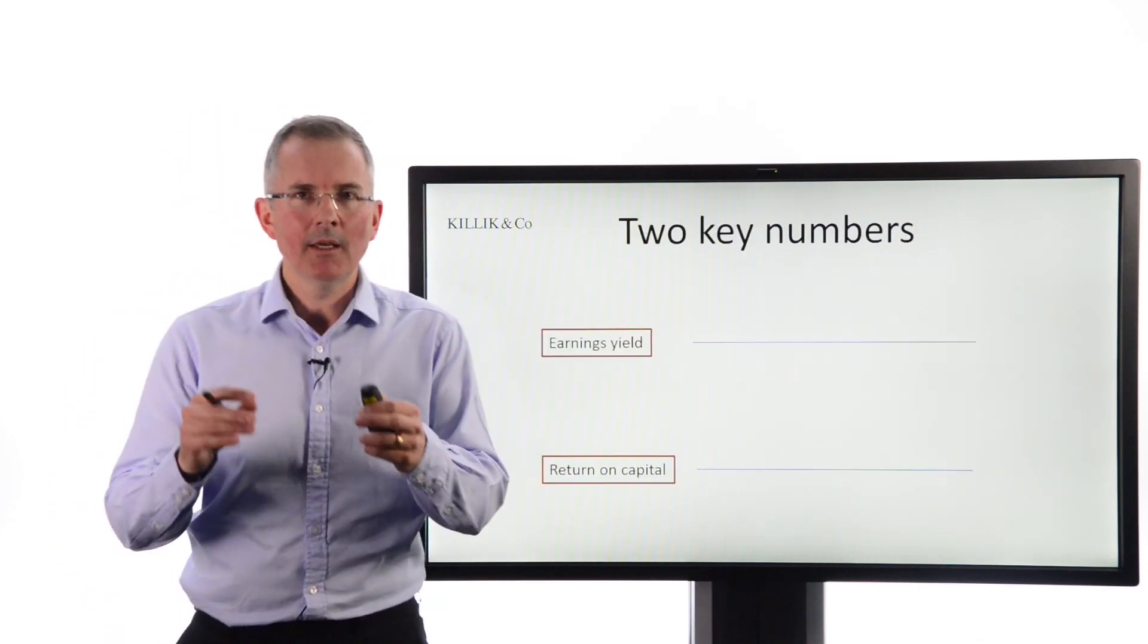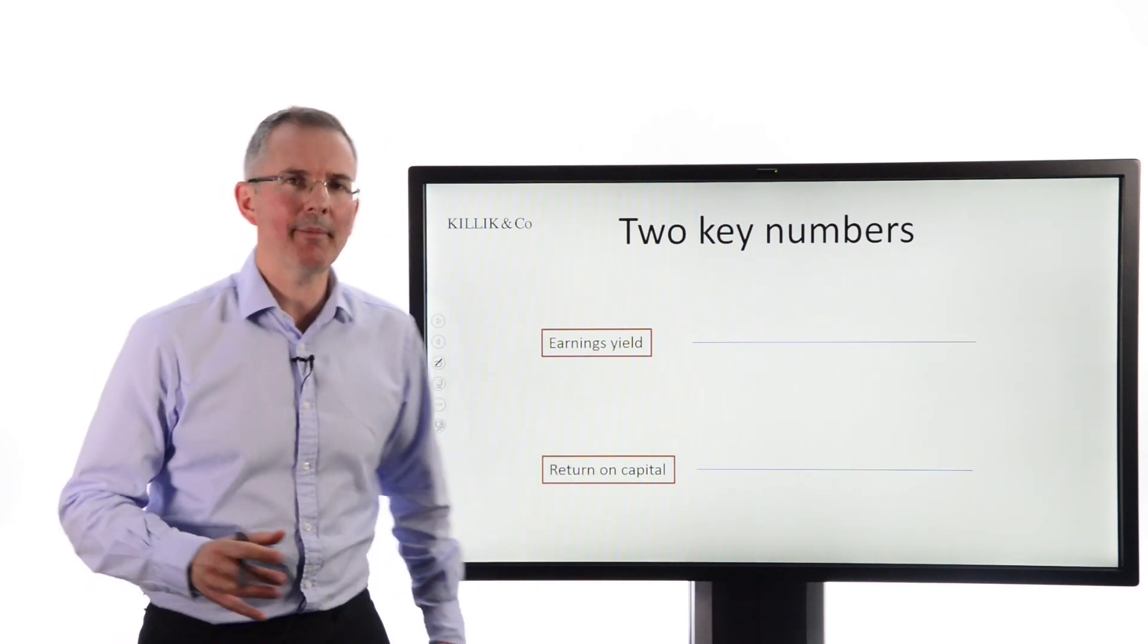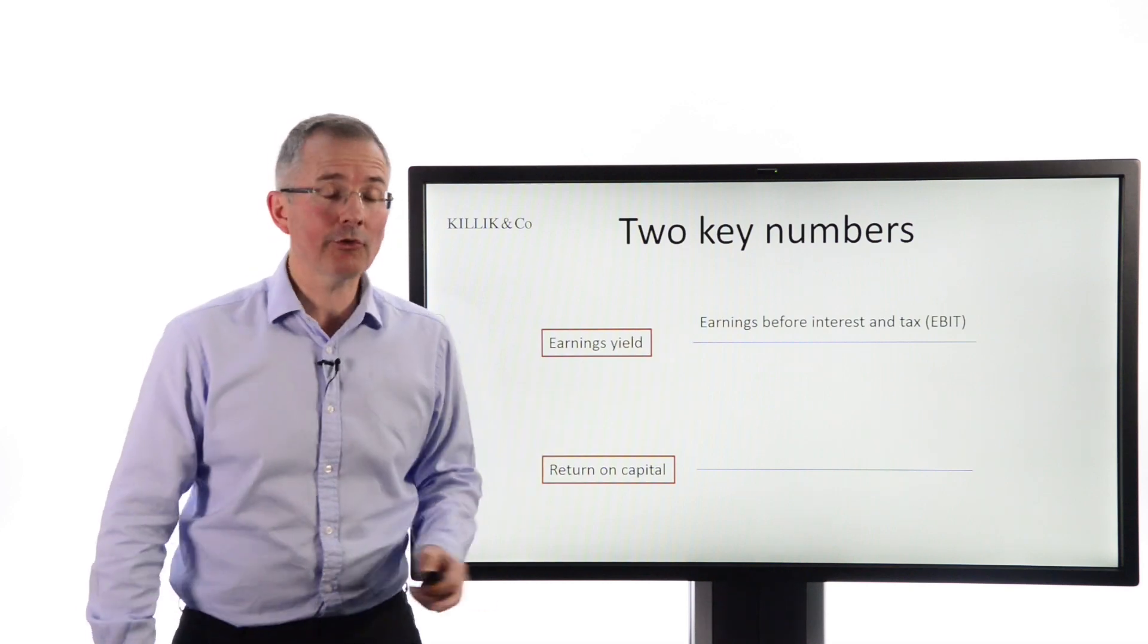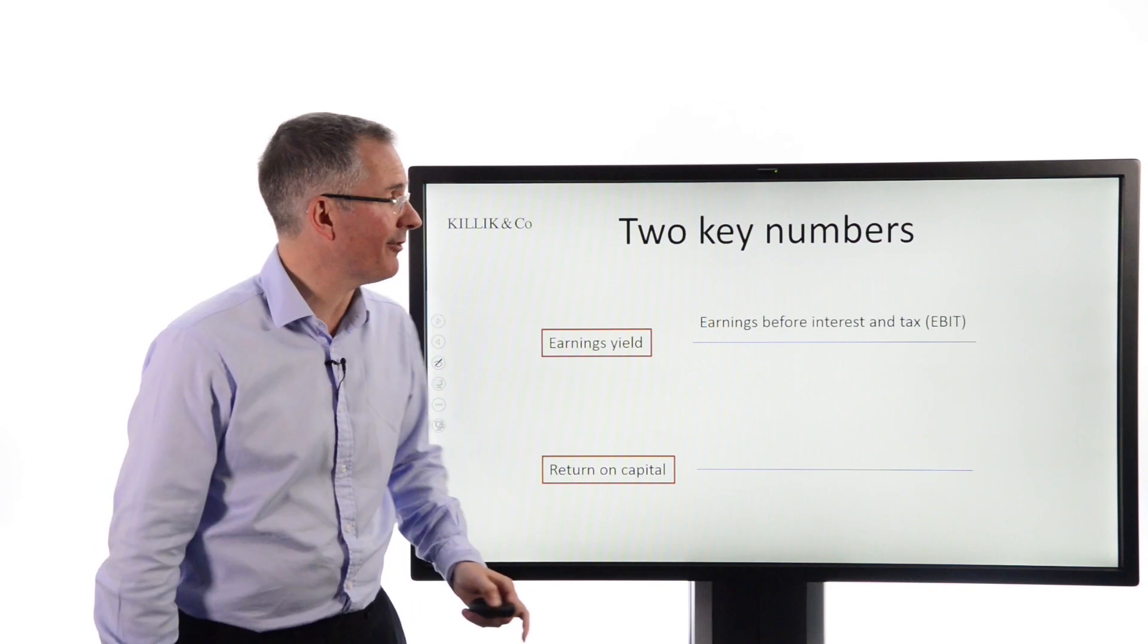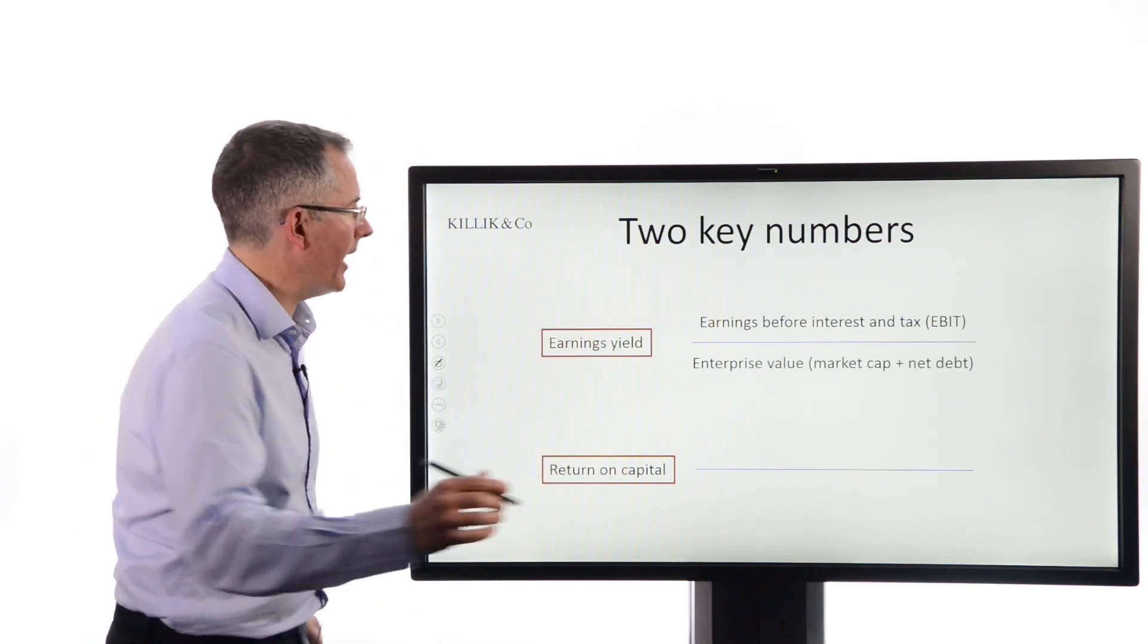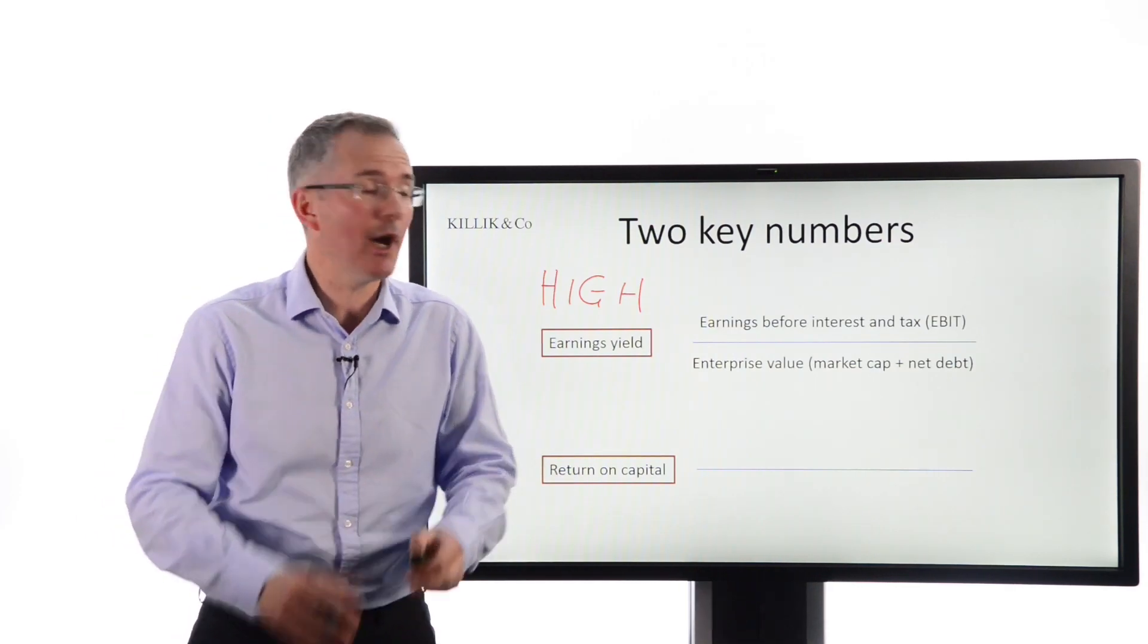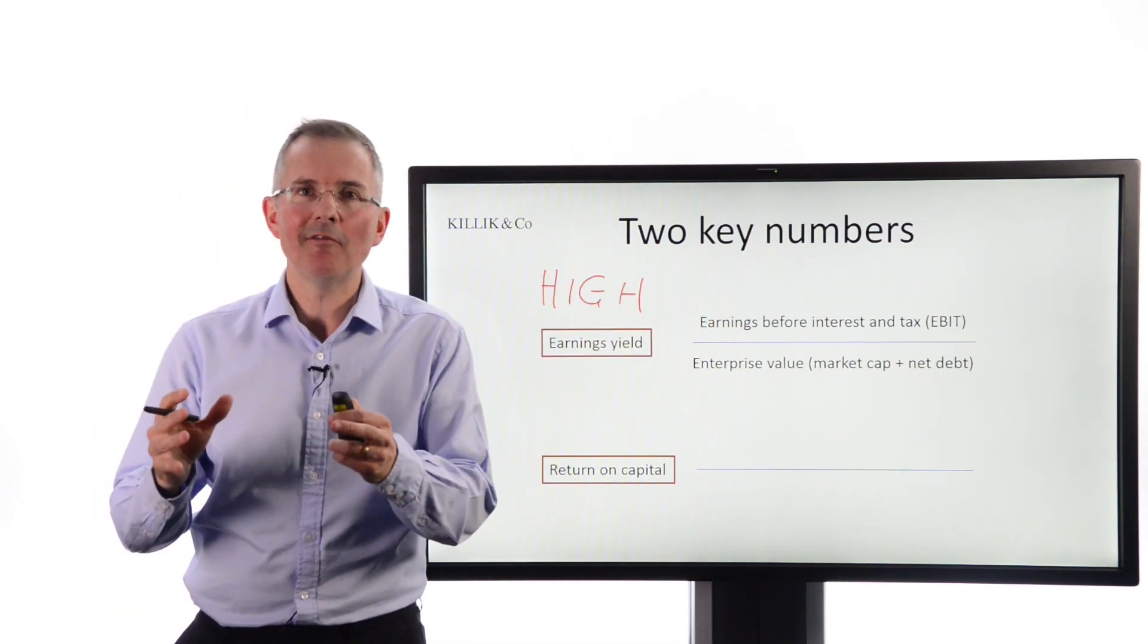OK, what are the two numbers? Basically, Greenblatt said there are two key numbers. And this is based on some principles that go right back to Ben Graham, the father of value investing. One is the earnings yield. So what you want to be looking for is stocks on an earnings yield basis. So that is earnings before interest and tax, profit, essentially, divided by the value of the business, enterprise value. And he said you're looking for stocks with a high earnings yield. It's the inverse, effectively, of the P-E ratio.